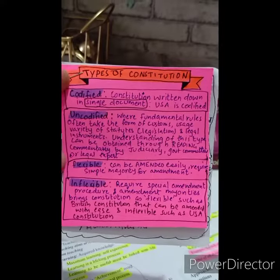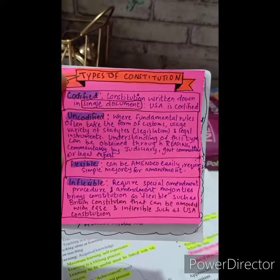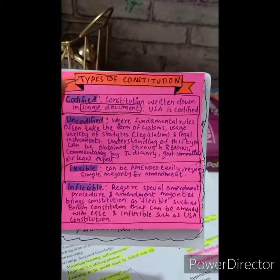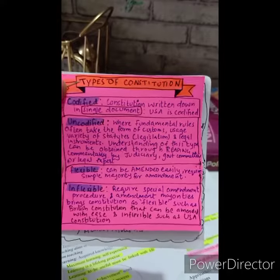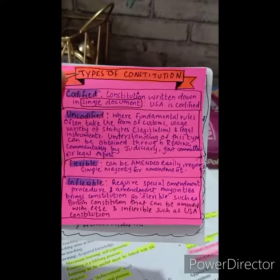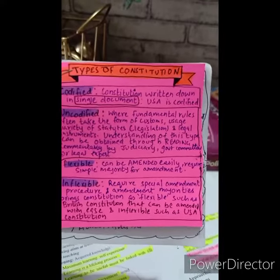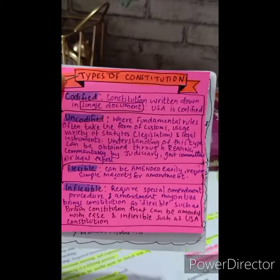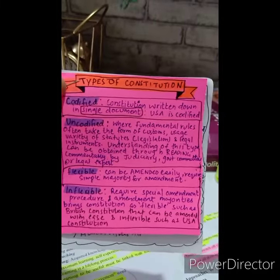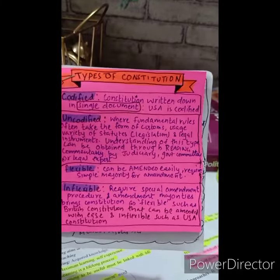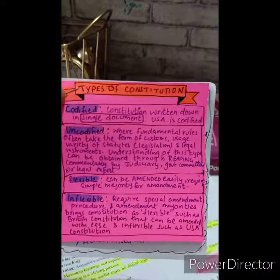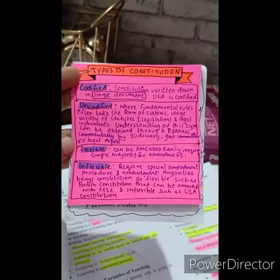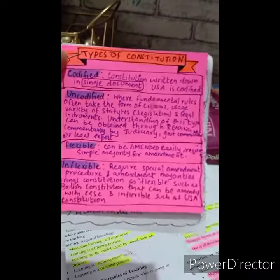Let's first discuss codified constitution. Under codified constitution, there is a written down single document, and the best example is the USA. This is very simple — a codified constitution is a written document, a single document.